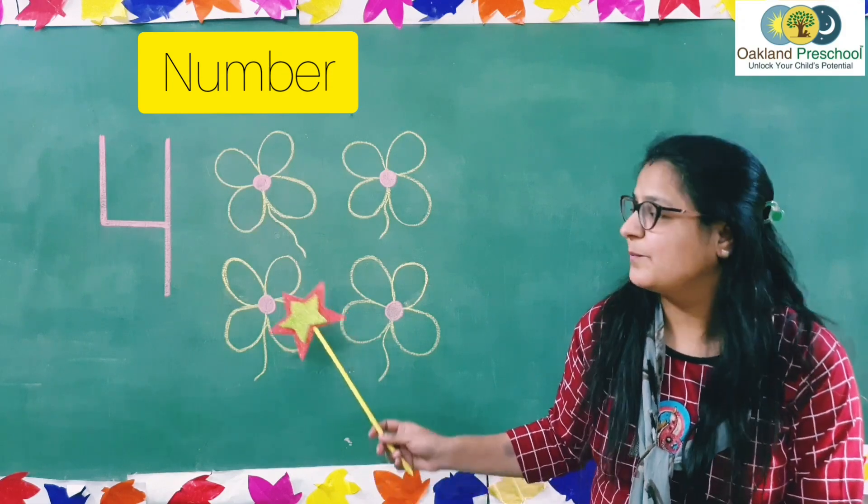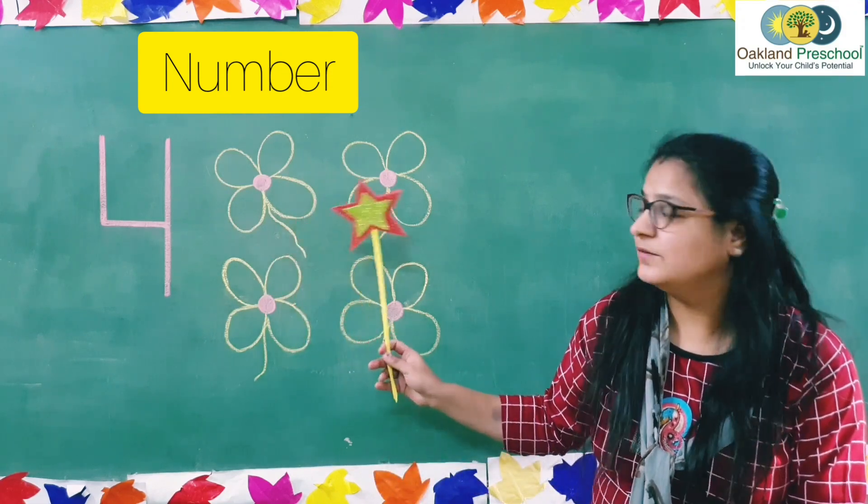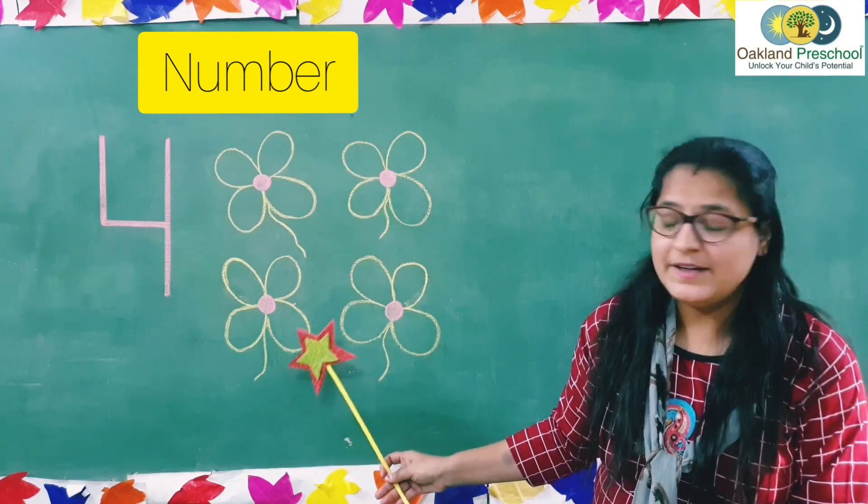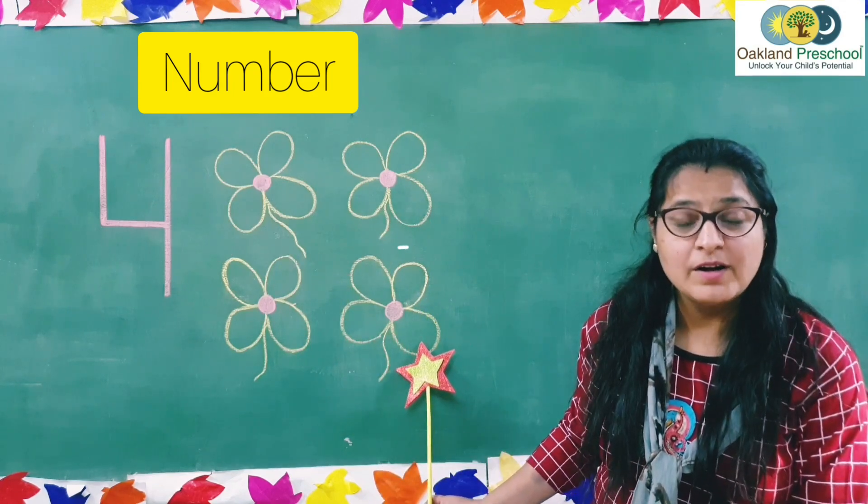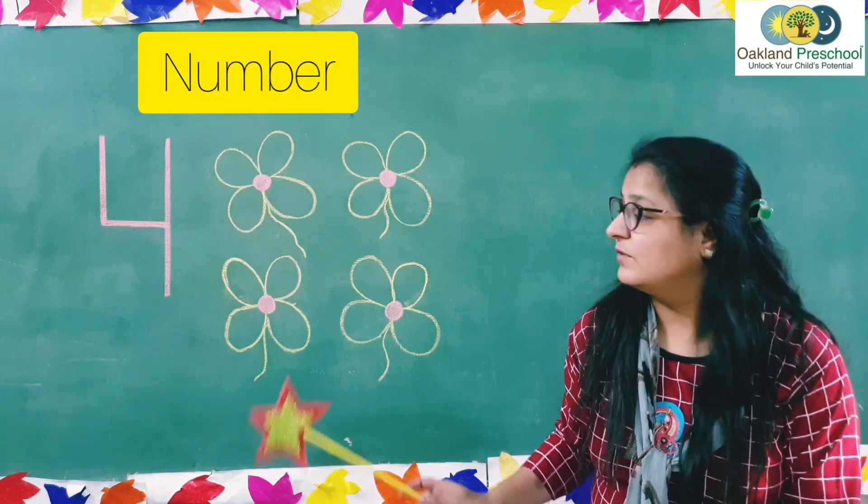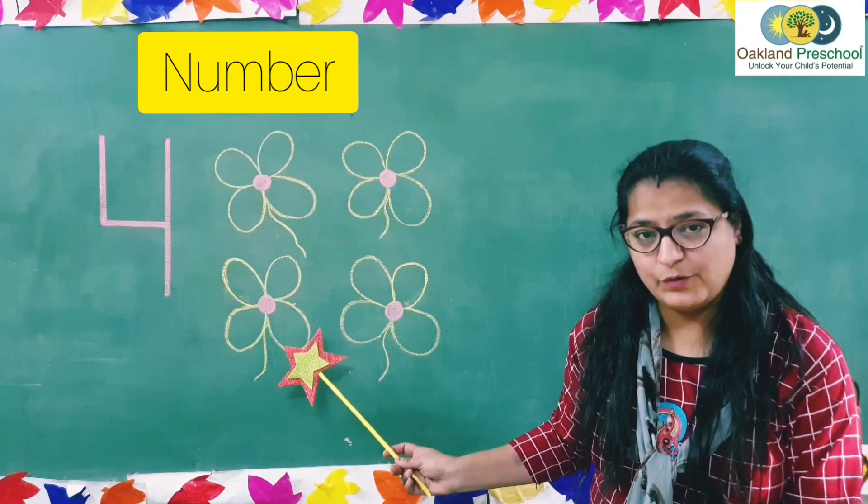Let's count with me. 1, 2, 3, 4. How many flowers are there? 4 flowers. How many flowers are there? 4 flowers.